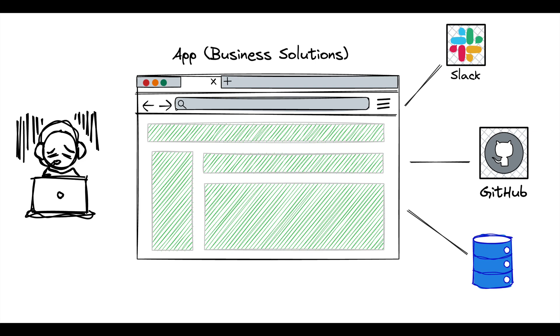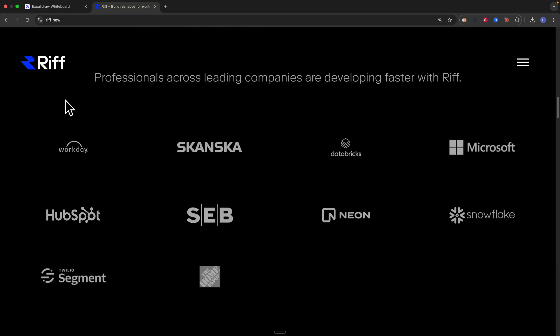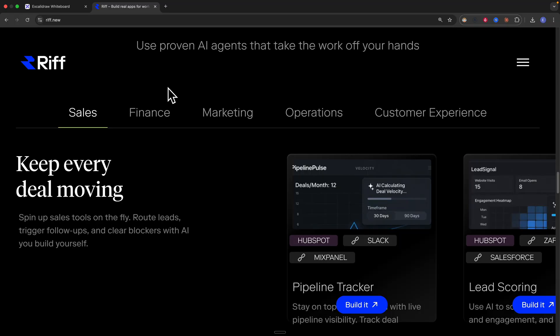If you're looking to build and launch real internal AI apps and automations that actually solve real business problems, then you're in the right place. In this video, I'm going to show you this awesome tool called Rift, which uses AI to build AI apps that solve business problems. Many leading companies are using Rift to develop their business solutions.